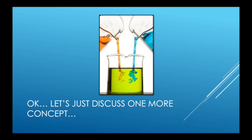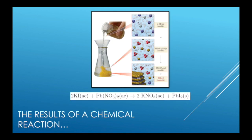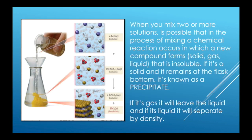Finally, let's define one last concept, which is the result of a chemical reaction. Take, for instance, this reaction as you can see on the screen. We're not going to worry about the chemical names of these species or the nomenclature of these species, but just take that we are mixing one solution with another. So when you mix two or more solutions, it's possible that in the process of mixing, a chemical reaction occurs in which a new compound forms. It can be either solid, gas, or liquid that is insoluble. If it's a solid and it remains at the flask bottom, it is known as the precipitate. If it's gas, it will leave the liquid. And if it's liquid, it will separate by its density.